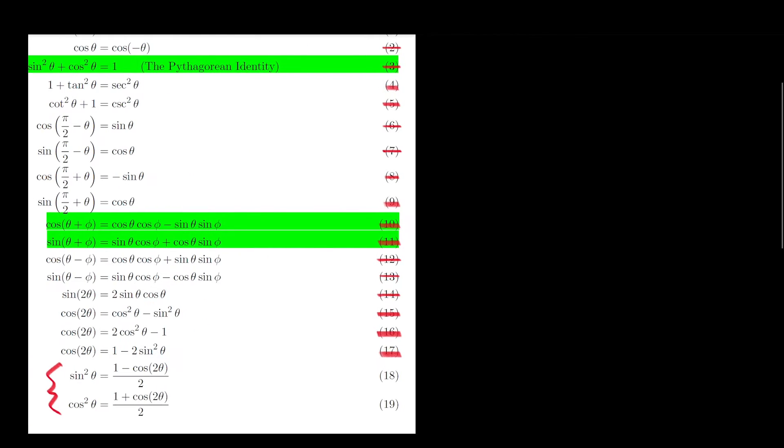So it's actually common to write these identities as follows. Trigonometric identity 18, in practice, is usually expressed as sin²(θ/2) = (1 - cos θ)/2. And similarly for trigonometric identity 19, which is expressed as cos²(θ/2) = (1 + cos θ)/2.